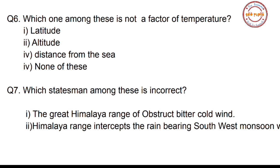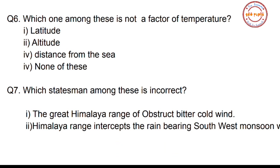The four options are: latitude, altitude, and distance from the sea. All three of these are factors of temperature, so option number four — none of these — is the correct answer, meaning all three listed options are indeed factors of temperature.